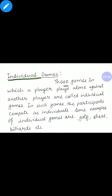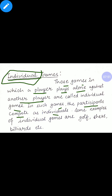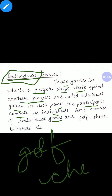Individual games are those in which a player plays alone against another player. In such games, the participants compete as individuals — each participant plays on their own. Some examples of individual games are golf, chess, billiards, etc. So these are all examples of individual games.